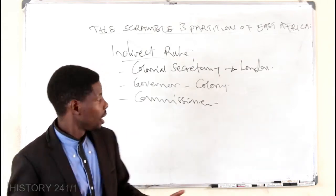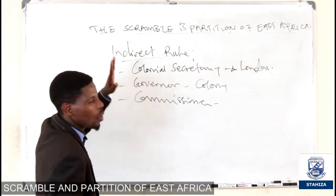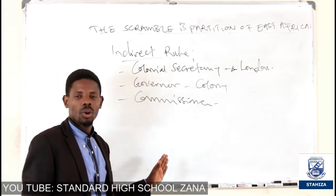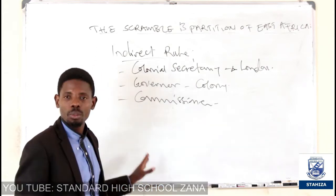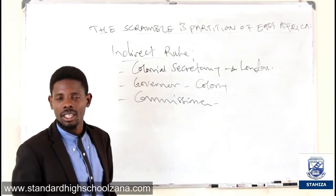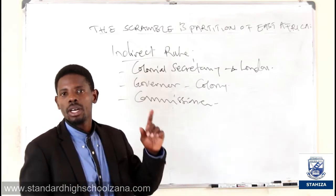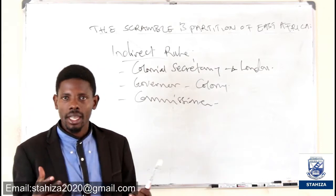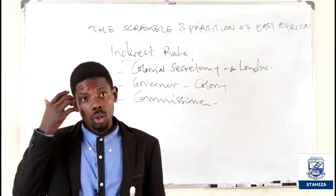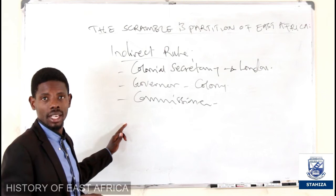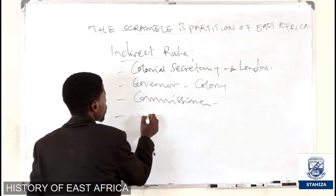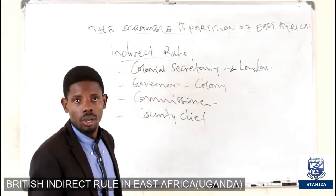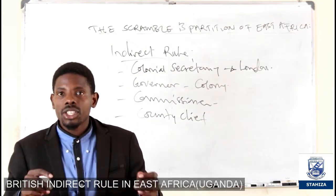Remember, these positions were a must — they had to be filled by British personnel. These places were not made for Africans, not for Ugandans, not for Kenyans in this system of indirect rule. Through this chain, the Africans started from the county chief, also known as the Saza chief.